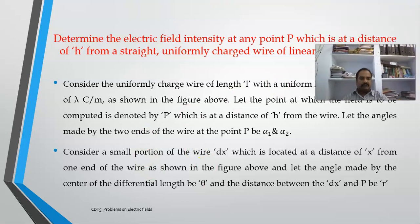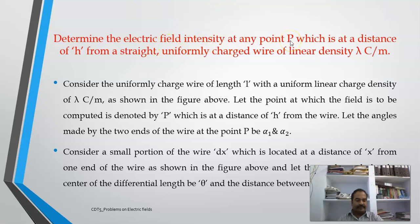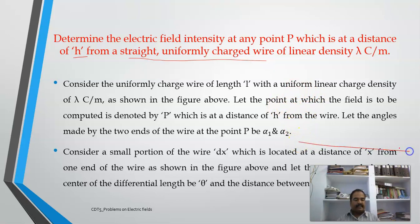The question is a very general one: determine the electric field intensity at any point P, which is at a distance of h from a straight, uniformly charged wire of linear density lambda coulomb per unit length. I will take this as the wire — straight, uniformly charged wire. Let the length of the wire be l, and I will take the point P. The shortest distance between point P and the line I will take as h.